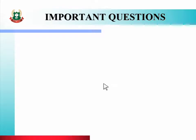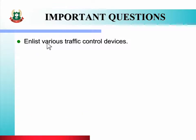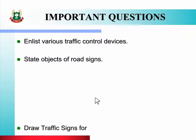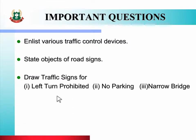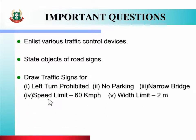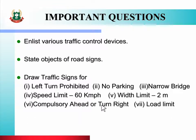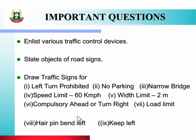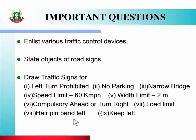Important questions on today's topics are: Enlist various traffic control devices. State objects of road signs. Draw traffic signs for left turn prohibited, no parking, narrow bridge, speed limit 60 km per hour, width limit 2 meter, compulsory ahead or turn right, load limit, hairpin bend left, keep left, right hand curve. You have to solve these questions as assignment. If you face any difficulty, watch the video again or refer the notes provided to you, or contact me.